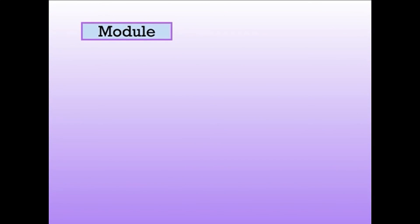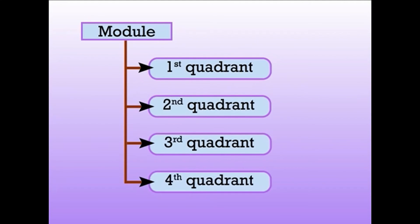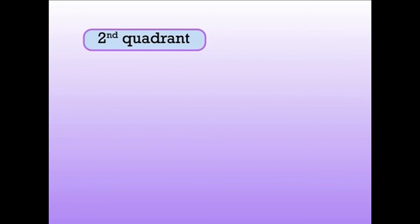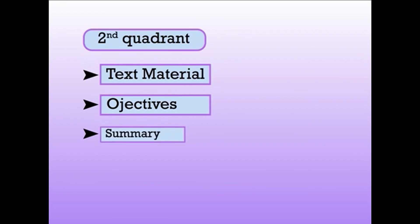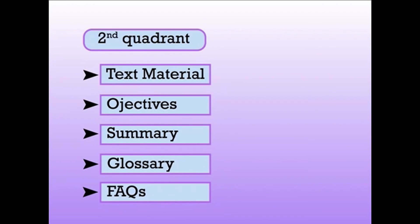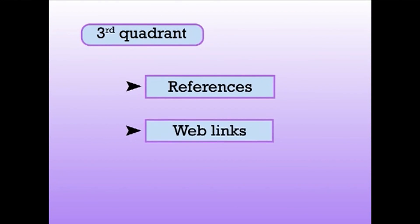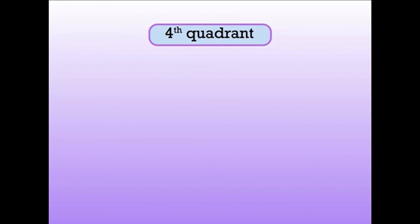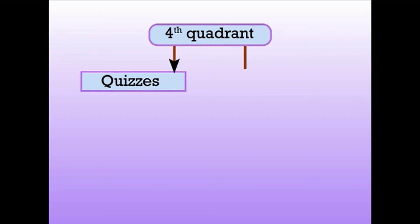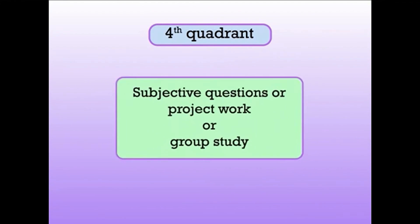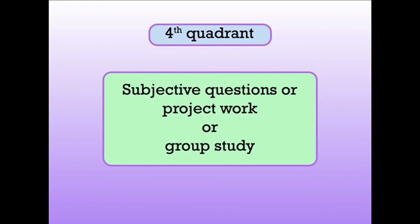Each module is further subdivided into four quadrants. The first quadrant comprises audiovisual lectures of 25 to 30 minutes each. The second quadrant has text material, objectives, summary, glossary, and FAQs. The third quadrant consists of references and web links, and the fourth quadrant comprises quizzes and assignments having 5 to 19 MCQs per module, 5 assignments per module, subjective questions, project work, or group study.